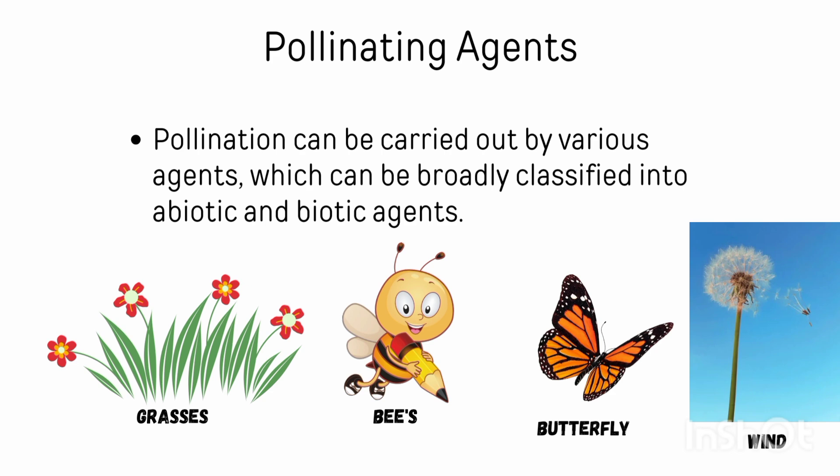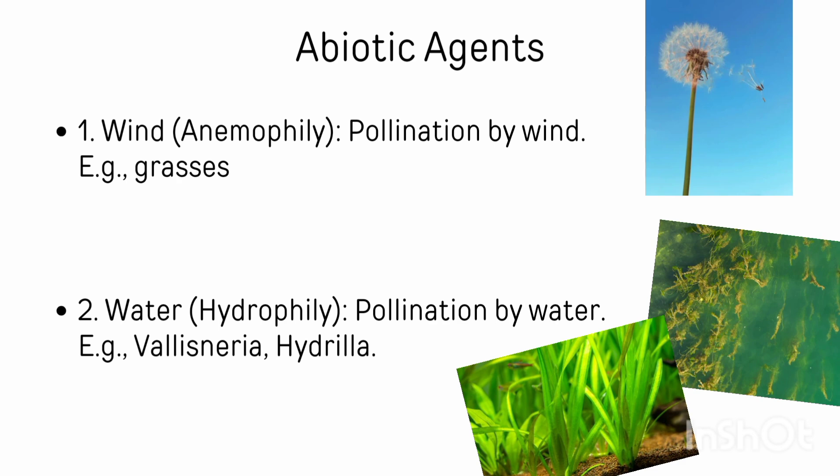First we talk about abiotic agents. Abiotic agents include wind and water. Pollination carried out by wind is called anemophily. Examples of anemophily are grasses. Water-pollinated plants include Hydrilla.